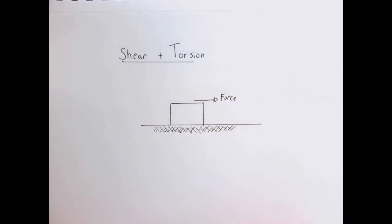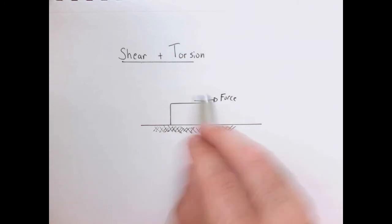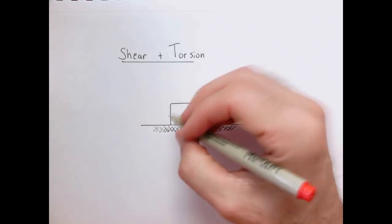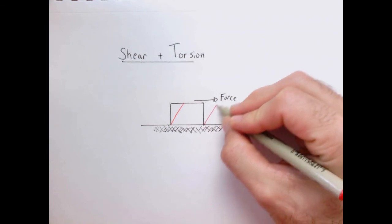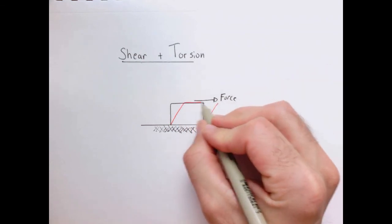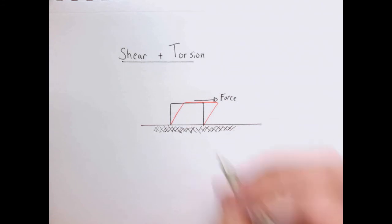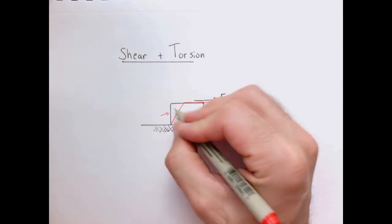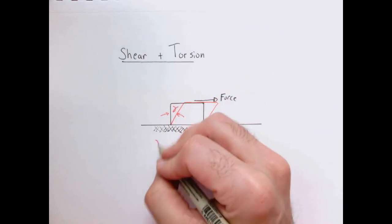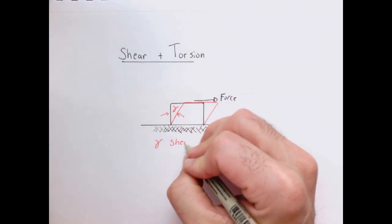The block needs to be glued to the table, otherwise it might just slide along. But if it's glued to the table, it will want to deform. If I apply a force uniformly across the upper surface of this block, what we observe is that it deforms — the lines just tilt over. This angle here we call the shear angle, and we use the symbol gamma for it.